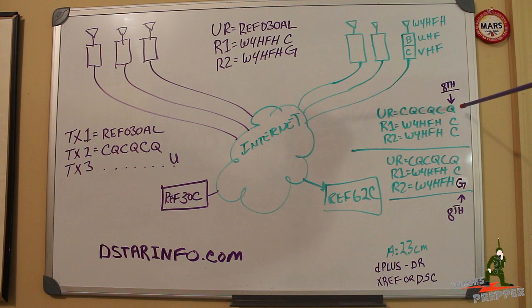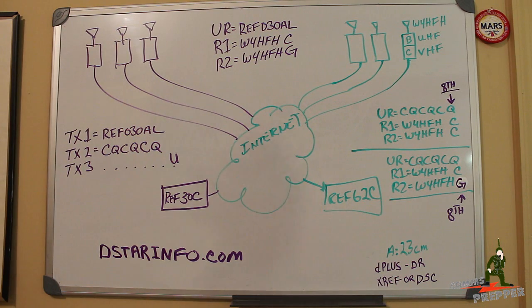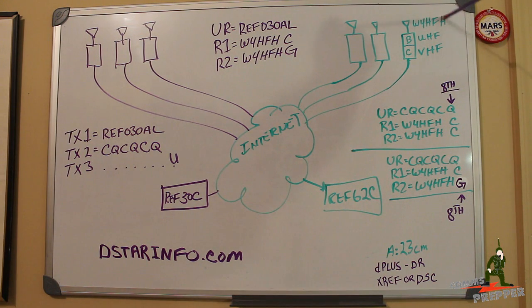The UR line basically is telling everybody else, here's your transmission, who you want to talk to. It can be call sign specific, repeater specific, or in this case CQCQCQ. You want to talk to anybody that will hear your transmission. The second line, the R1 line, is what repeater are you going to connect to? Well in this case I'm connecting to W4HFH, so W4HFH, but I'm coming in VHF, so in the 8th position, and this is critical, I put C.